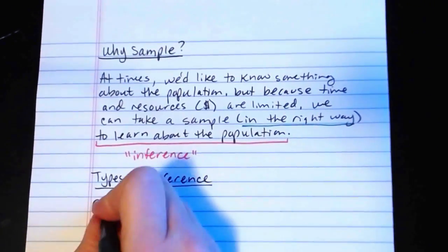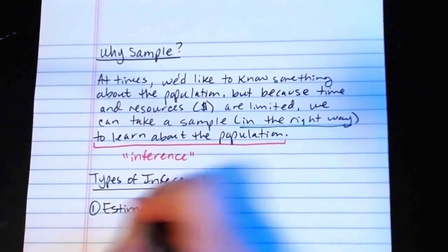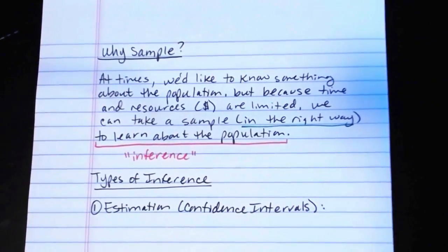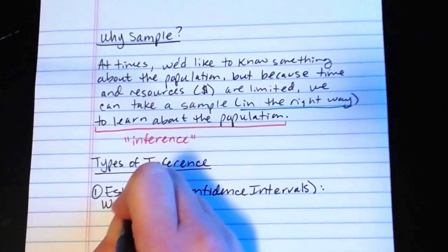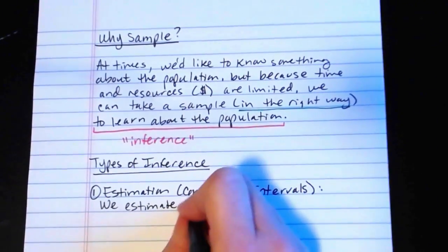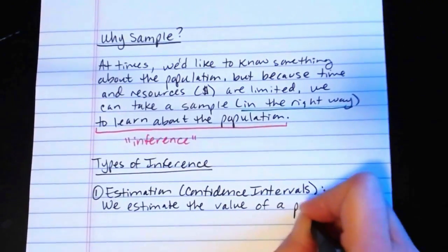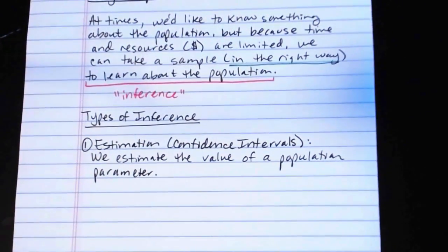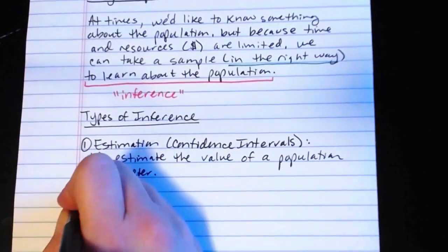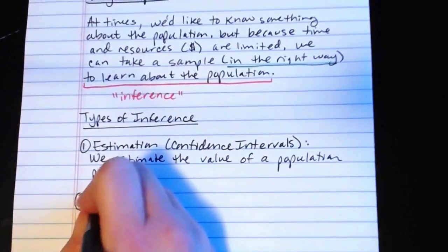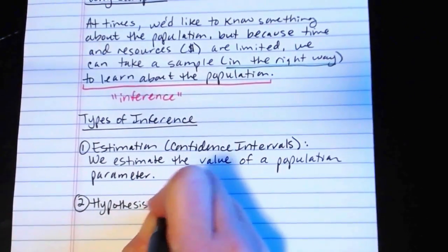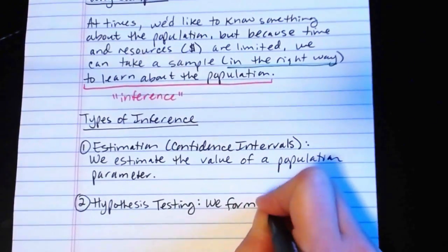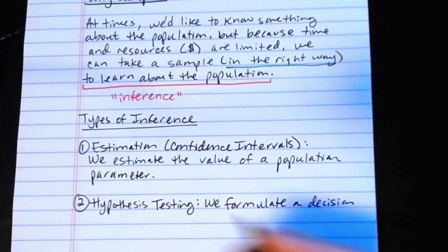The first type is called estimation. This is where we make what are called confidence intervals. But basically, in estimation, we estimate the value of a population parameter. Specifically, we're estimating a value. The second main type of inference is called hypothesis testing. And here we formulate a decision about a population parameter.